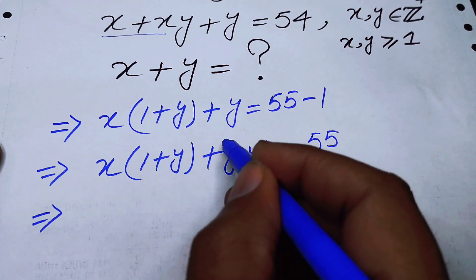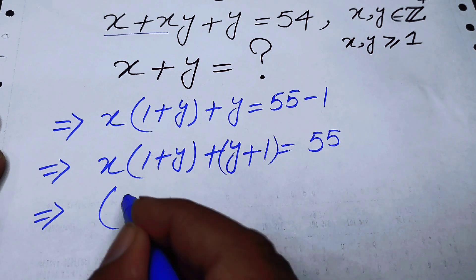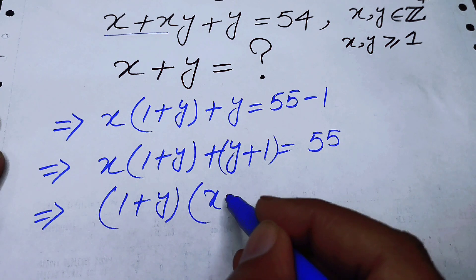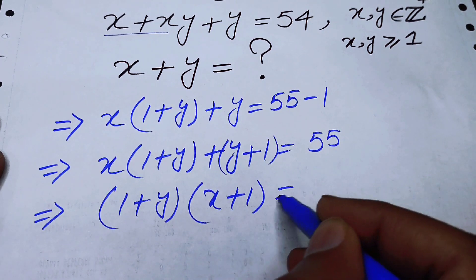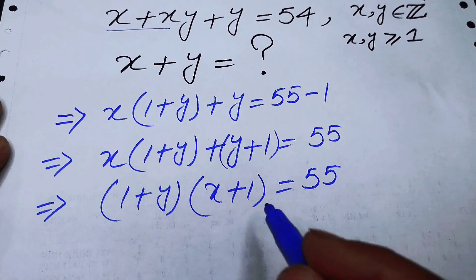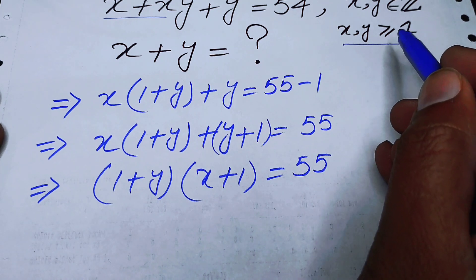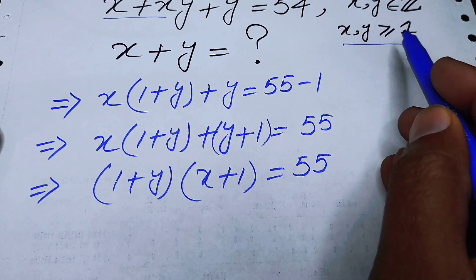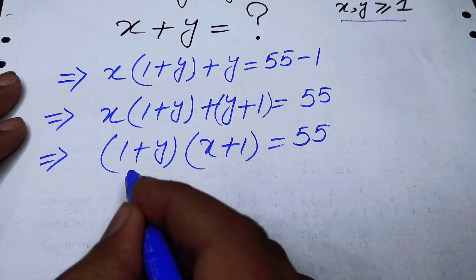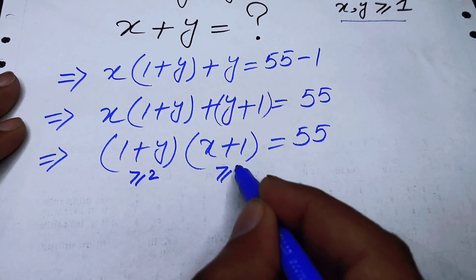Now we factor the left side by taking out (1 + y) from both terms, obtaining (1 + y)(x + 1) = 55. Remember that x and y are greater than or equal to 1, so therefore (1 + y) is greater than or equal to 2, and (x + 1) is greater than or equal to 2.